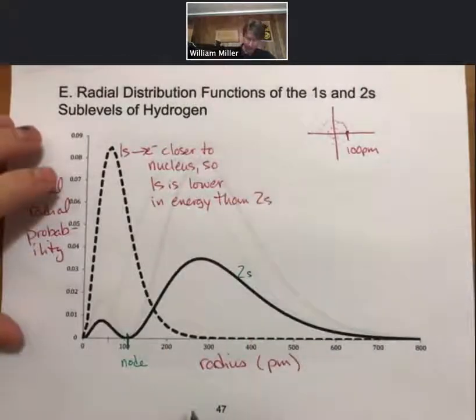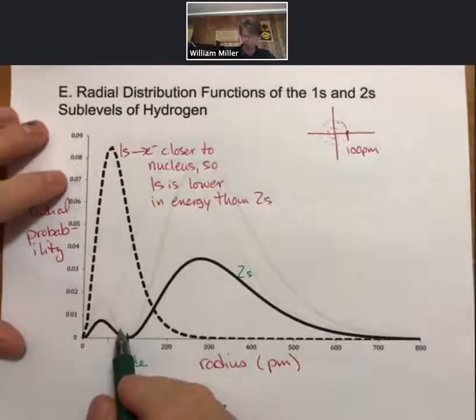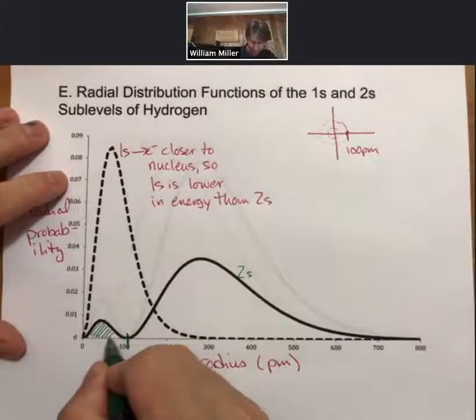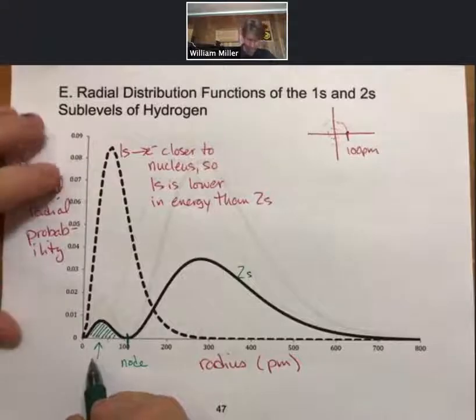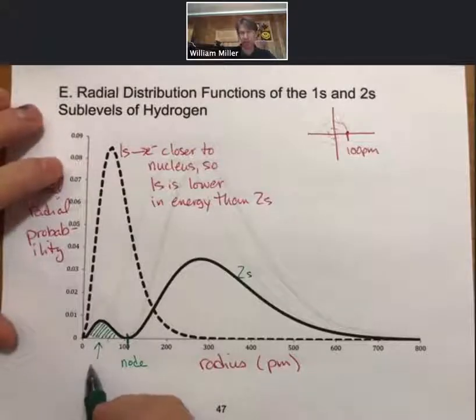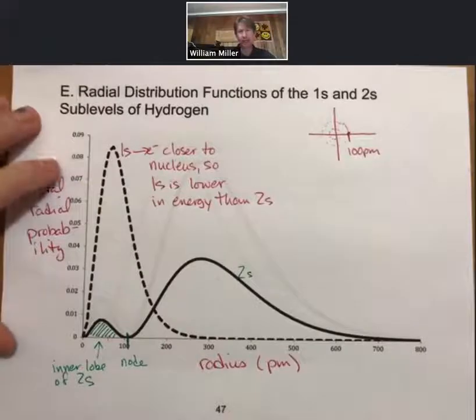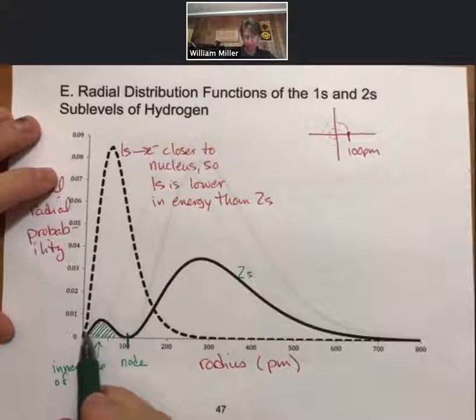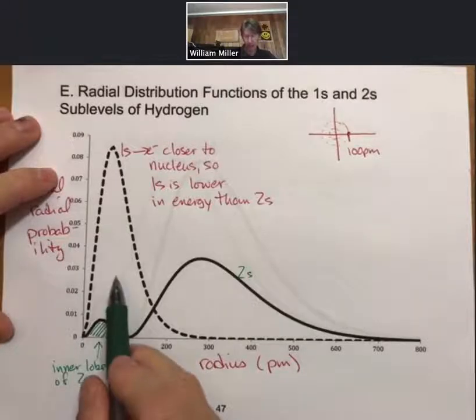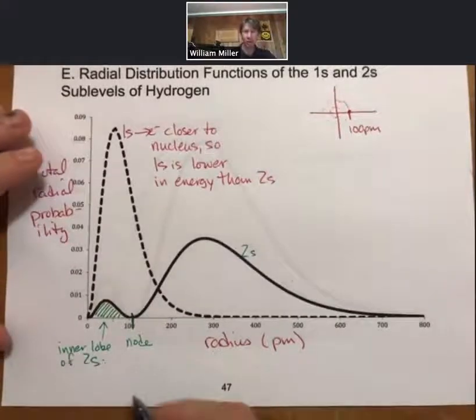And then we have our node, and within the 2s orbital there is this little tiny portion down here, and this portion is called the inner lobe of 2s. The inner lobe of 2s is closer to the nucleus than most of the 1s orbital.